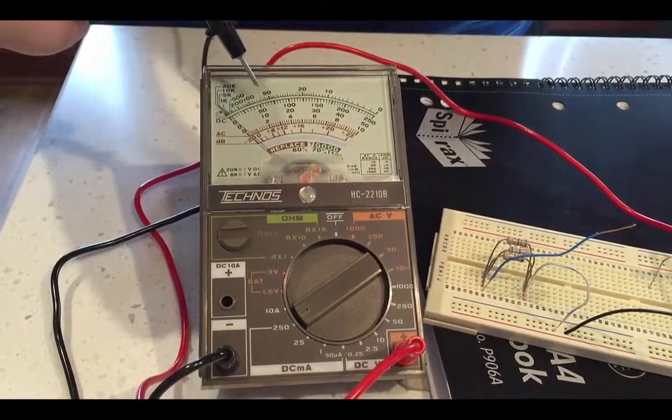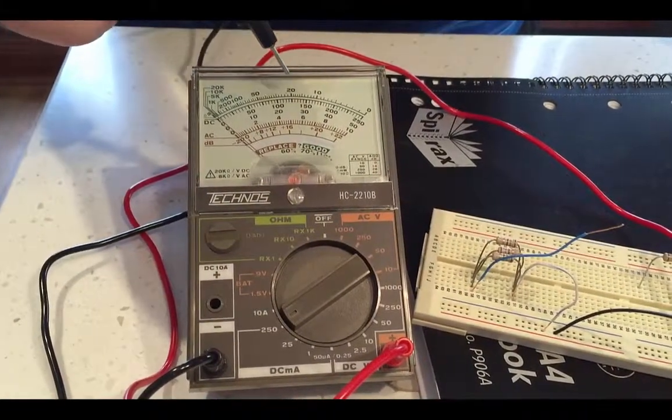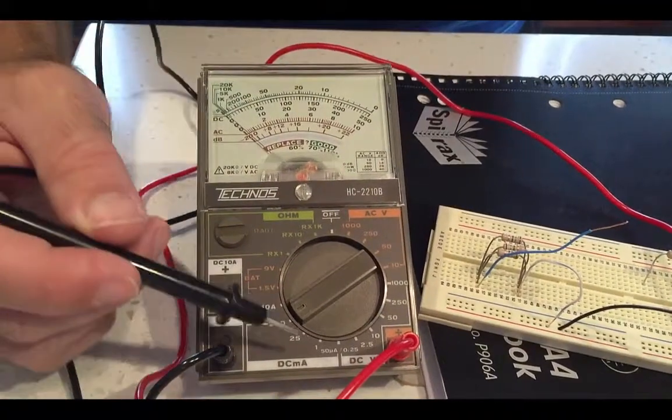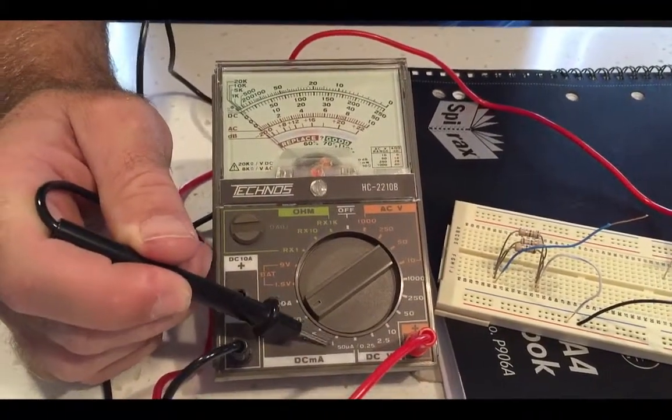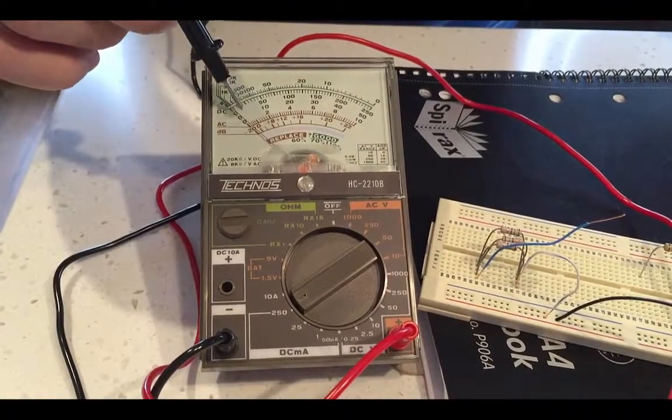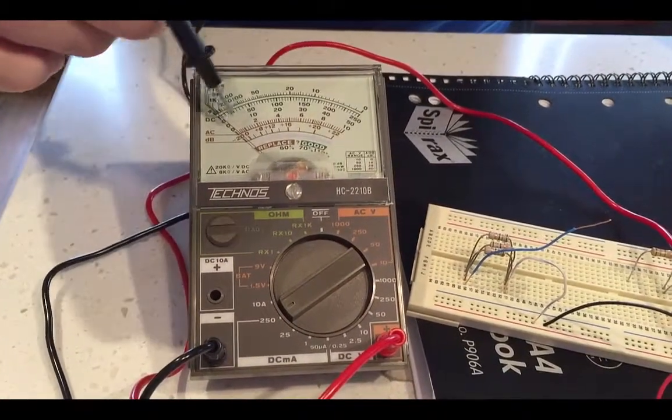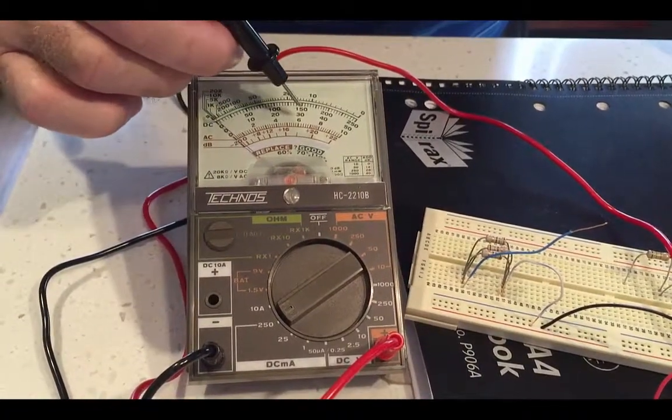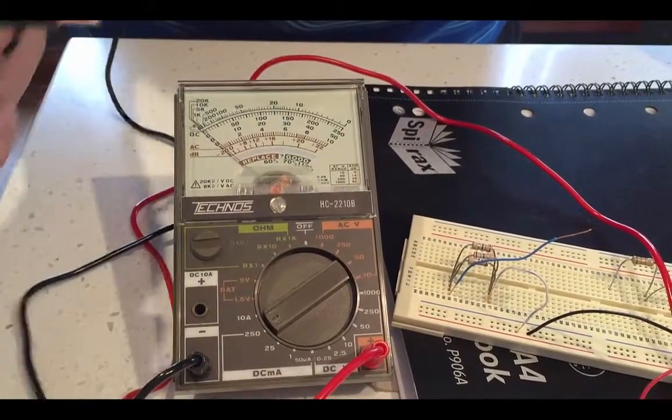So that reads 0, 50, 100, 150, 200 and 250. If that was set on 1 amp, 1 milliamp, then I'd use this scale here, the 0 to 10. So that would be 0.2, 0.4, 0.6, 0.8 and 1 milliamp.